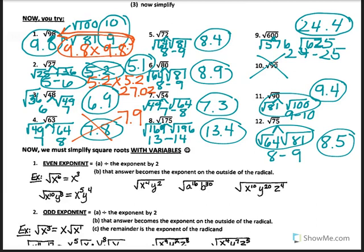Number 5: 8.4 times 8.4 gives 70.56 — are we good? Yes. Number 6: 8.9 times 8.9 gives 79.21 — good. Number 7: 7.3 times 7.3 gives 53.29 — good. Number 8: 13.4 times 13.4 — we messed that one up, it went over. Try 13.3 times 13.3 — still over. Try 13.2 times 13.2 — that works.